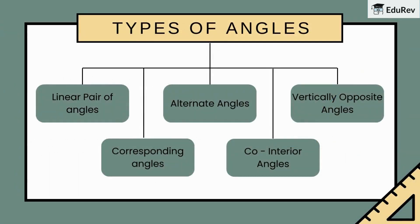Types of angles are: linear pair of angles, corresponding angles, alternate angles, co-interior angles, and vertically opposite angles.